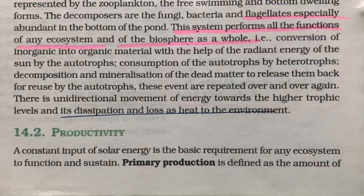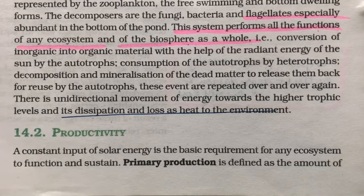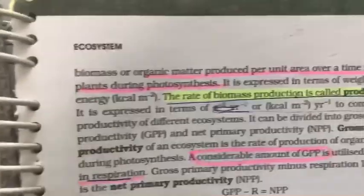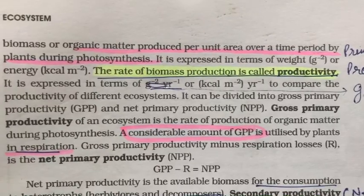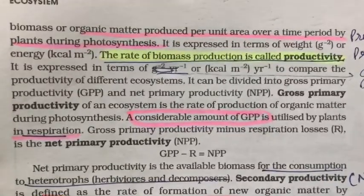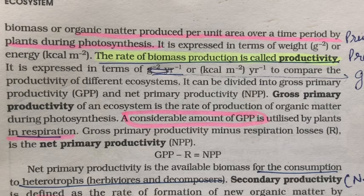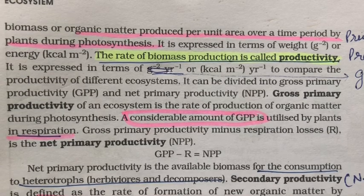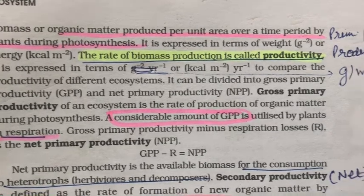Productivity is defined as the amount of biomass or organic matter produced per unit area over a time period by plants during photosynthesis. It is expressed in grams per meter square per year, or kilocalories per meter square per year.